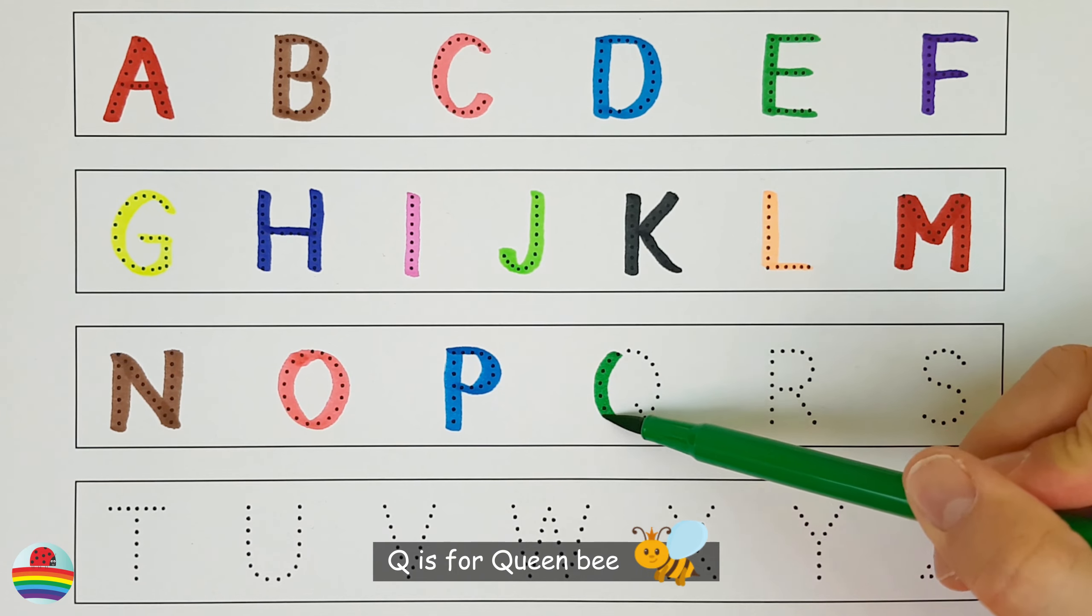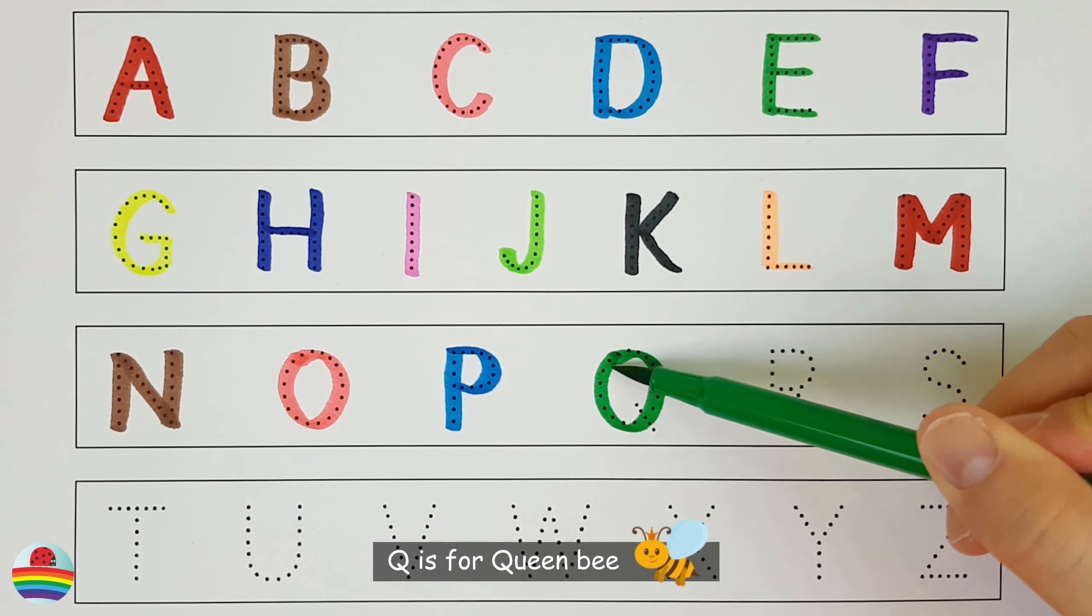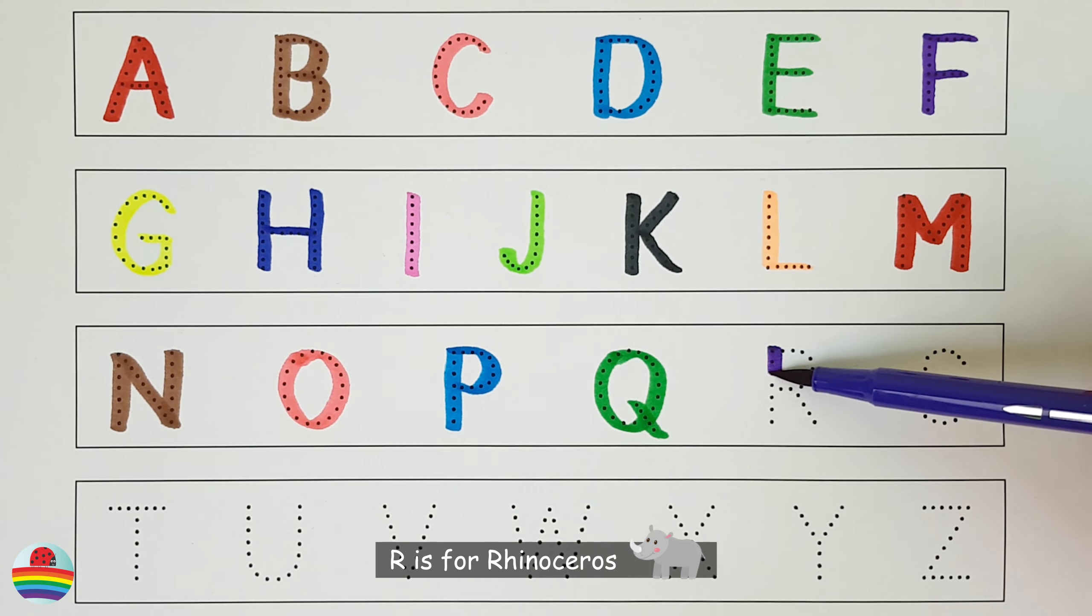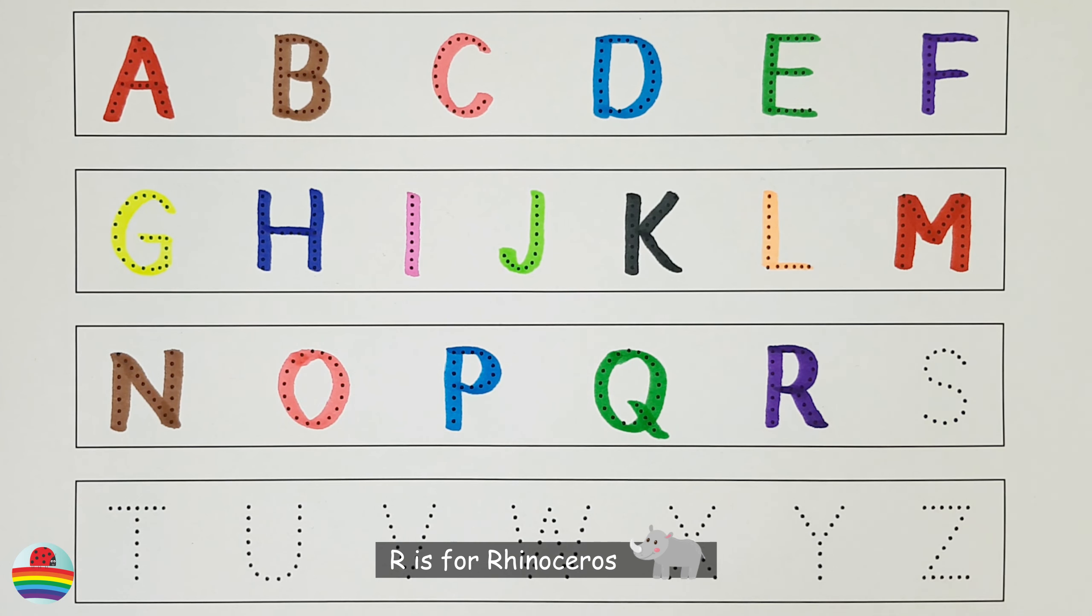Q. Q is for Queen Bee. Q. R. R is for Rhinoceros. R.